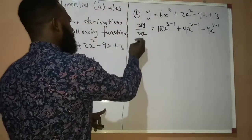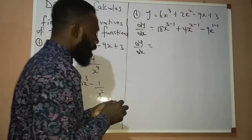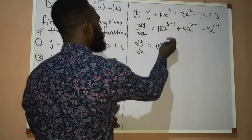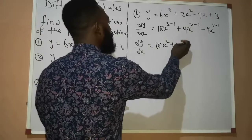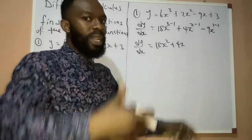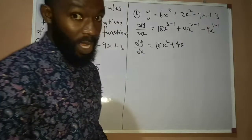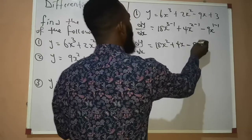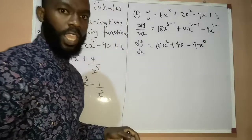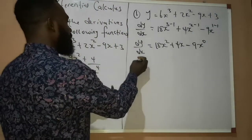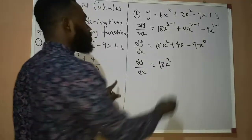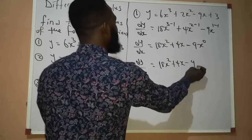So now if we continue with the math, dy over dx becomes — 3 minus 1 gives us 2 — so we have 18x raised to the power of 2 plus 4x raised to the power of 1. Now 2 minus 1 gives us 1, but there is no need to write the power 1 since ordinary x already means the power is 1. Minus 9x raised to the power of 1 minus 1 is 0. So finally, dy over dx is equal to 18x raised to the power of 2 plus 4x minus 9.